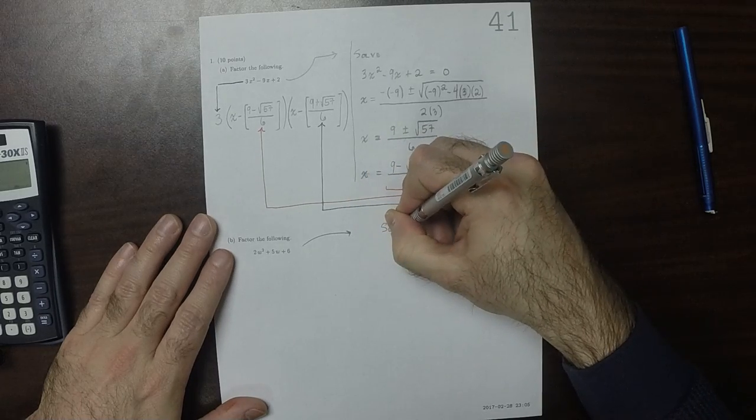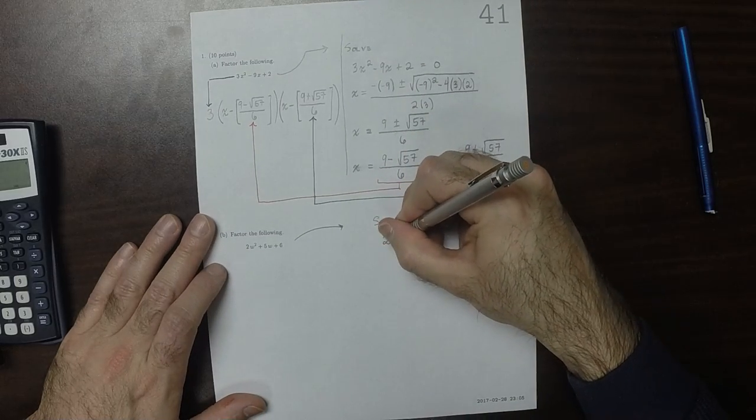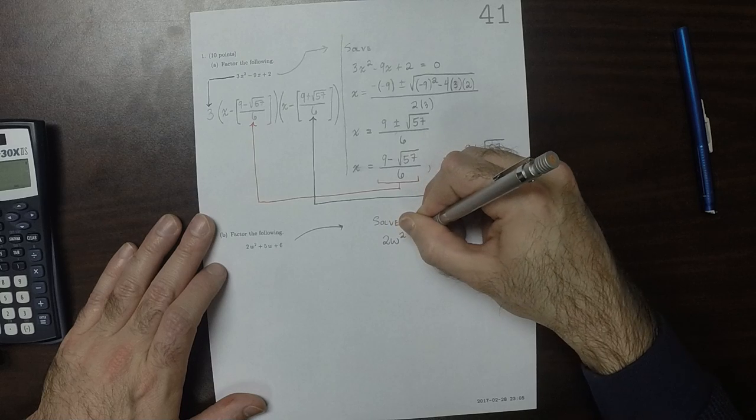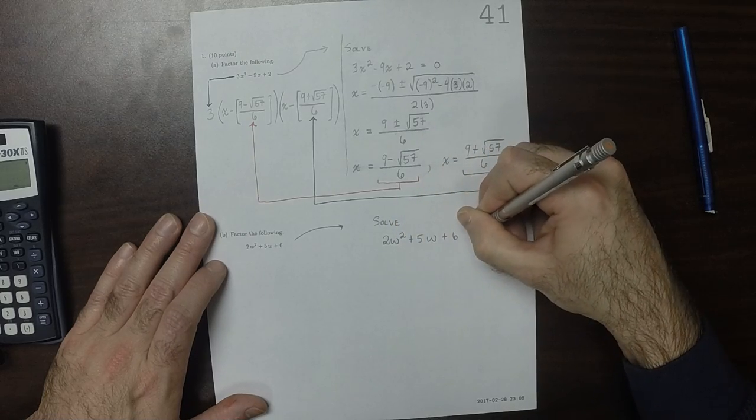Let's solve the corresponding quadratic equation. So 2w squared plus 5w plus 6 equals 0.